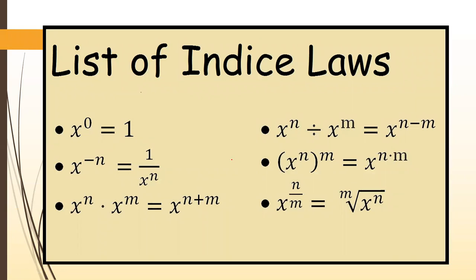The laws of indices are comprised of several rules. The first rule is: x to the power 0 equals 1. For example, 9 to the power 0 equals 1, 25 to the power 0 equals 1, and 1 million to the power 0 equals 1 as well.